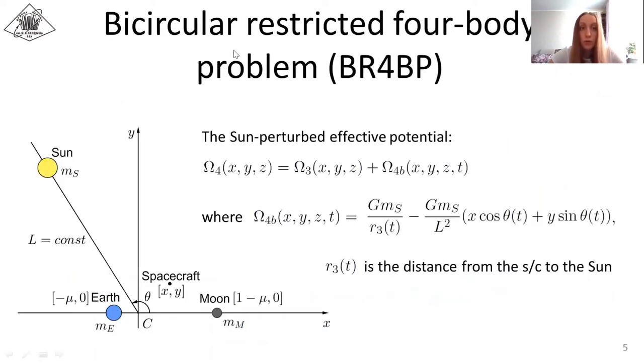The bicircular restricted four-body problem incorporates into the Earth-Moon CR3BP the gravitational perturbation from the Sun. The Sun is assumed to revolve in a circular orbit around the Earth-Moon center of mass in the same plane. In order to obtain the spacecraft equations of motion in the BR4BP model from the equations of motion in the CR3BP model, it is enough to replace the effective potential by the following expression.